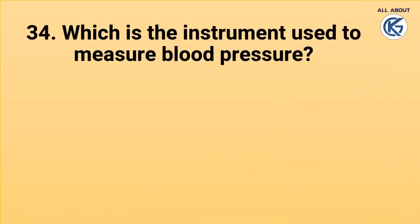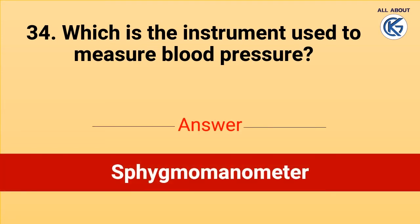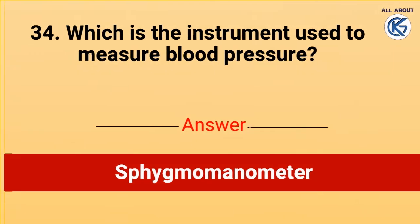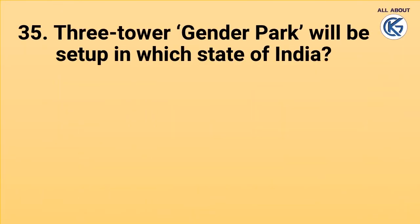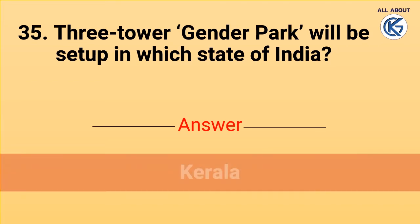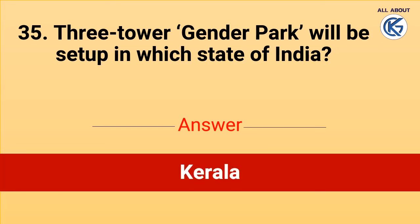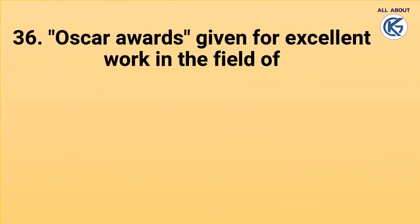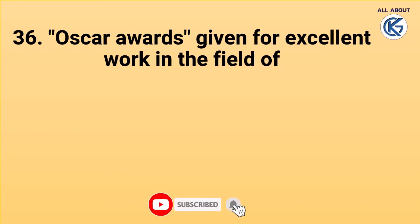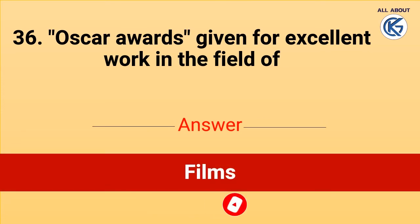The value of gold is determined in London. Which is the instrument used to measure blood pressure? Sphygmomanometer. Three-tower gender park will be set up in which state of India? Kerala. Oscar awards are given for excellent work in the field of films.